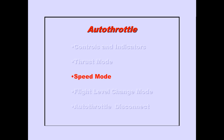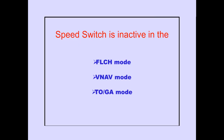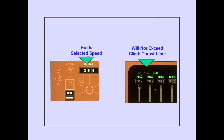Now let's discuss the speed mode. Pushing the speed switch in flight engages the autothrottle speed mode, and speed is displayed on the PFD. Speed switch is inactive if in the flight level change, VNAV, or TOGA mode. In the speed mode, the autothrottle holds the selected speed shown in the IAS mock window, but will not exceed the selected thrust limit. In this example, the autothrottle will maintain 250 knots airspeed, but will not exceed the climb thrust limit. The FMC provides minimum and maximum speed protection.